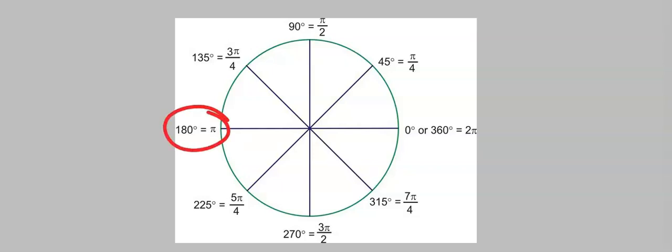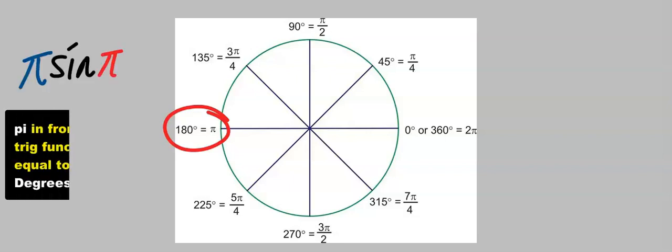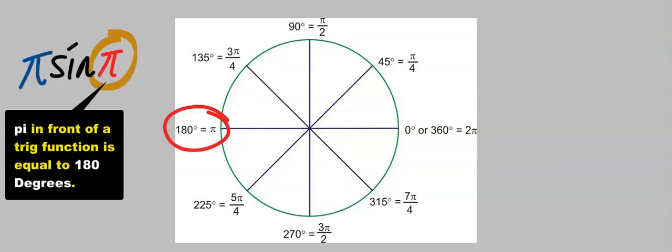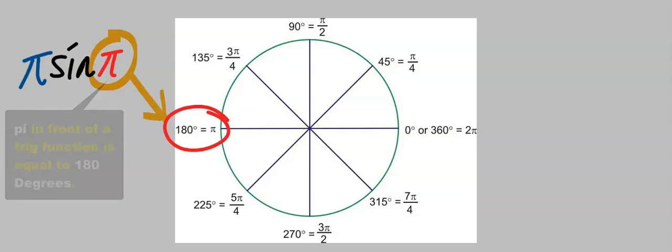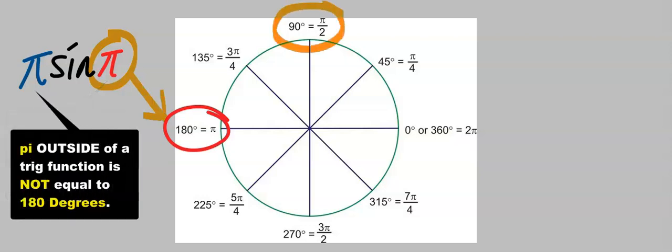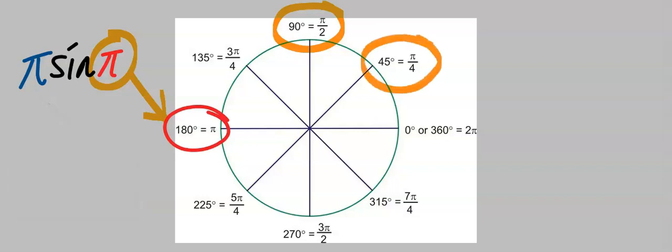Pi is equal to 180 when analyzing an angle. This pi is equal to 180. Hence, pi over 2 is same as 90 degrees, and pi over 4 is the same as 45 degrees. Always remember this.